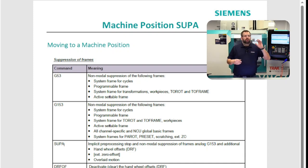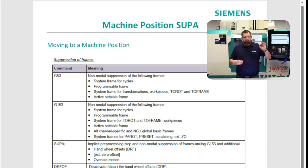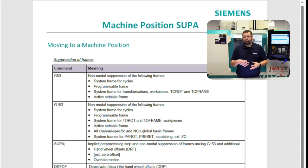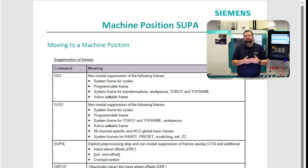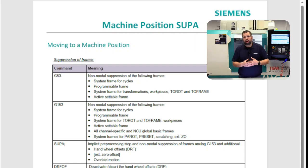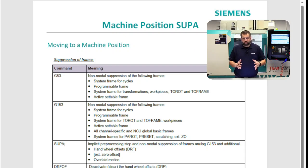G53 used to be a legacy command and only canceled a few offsets. G153 came later and canceled a few more, but the latest and greatest is SUPA. SUPA suppresses all offsets — that's how it works.